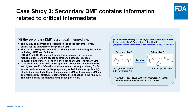If the secondary DMF is a critical intermediate but not an API, the quality of information presented in the secondary DMF is very critical for the adequacy of the primary DMF. Most quality sections will be critically evaluated during the review, including CGMP and facilities. ICH Q3A and ICH M7 may not apply. It is the primary DMF holder's responsibility to ensure proper control of all potential process impurities in the final API, either in the secondary DMF or primary DMF.